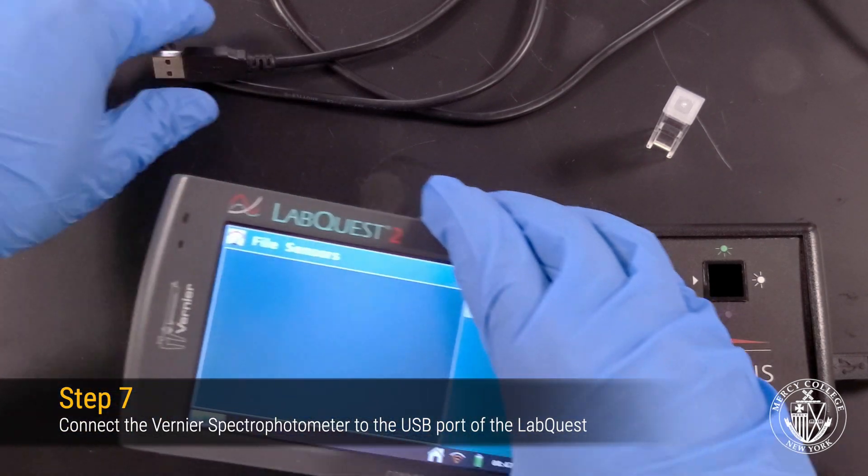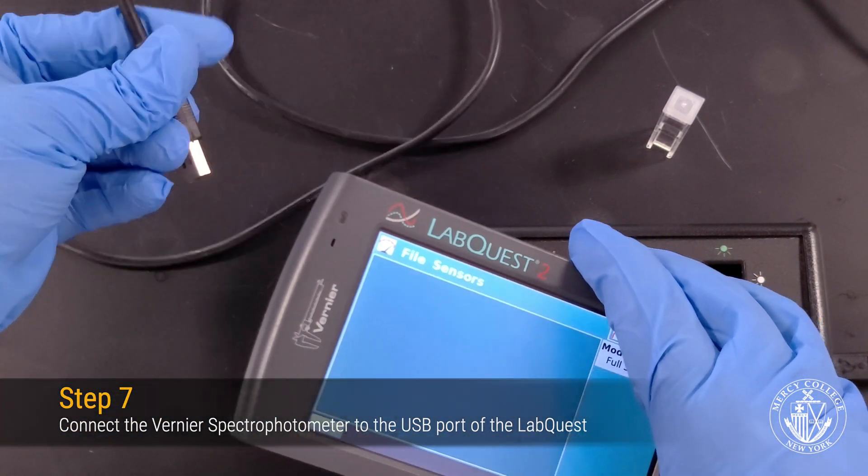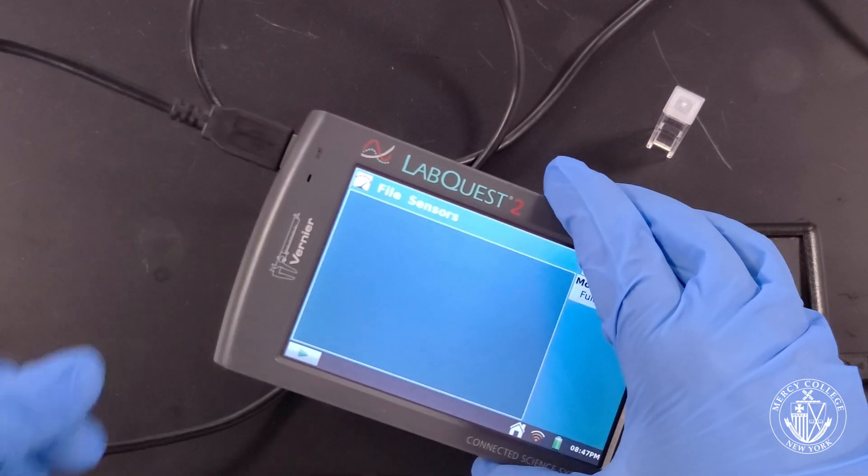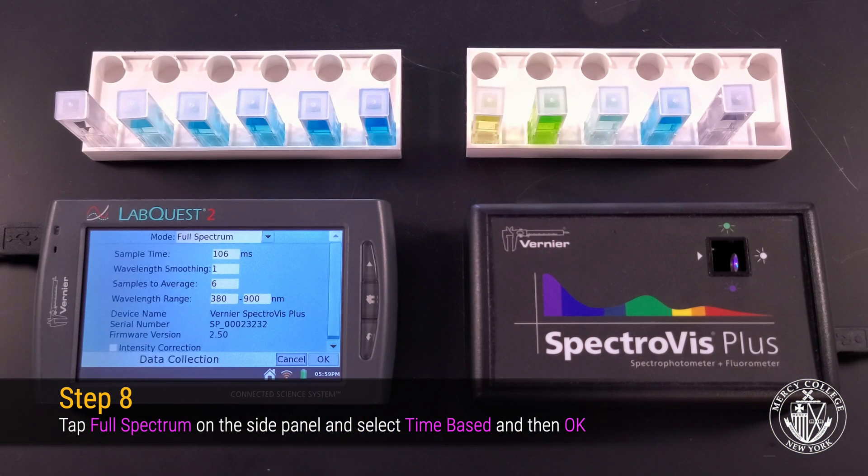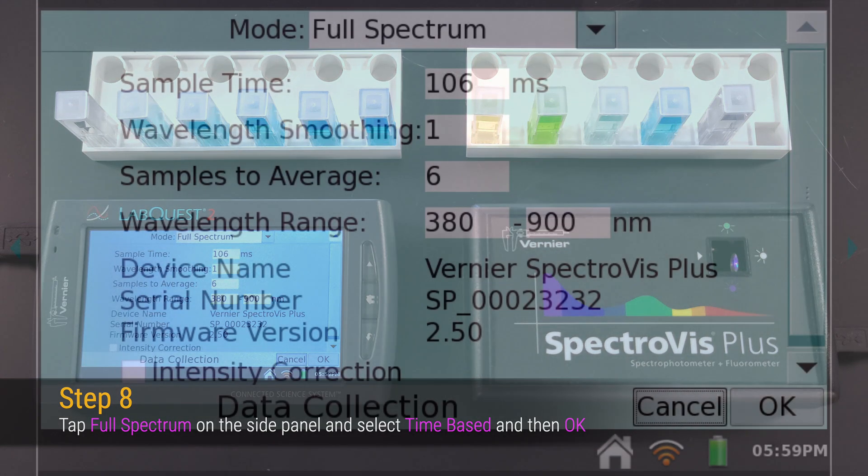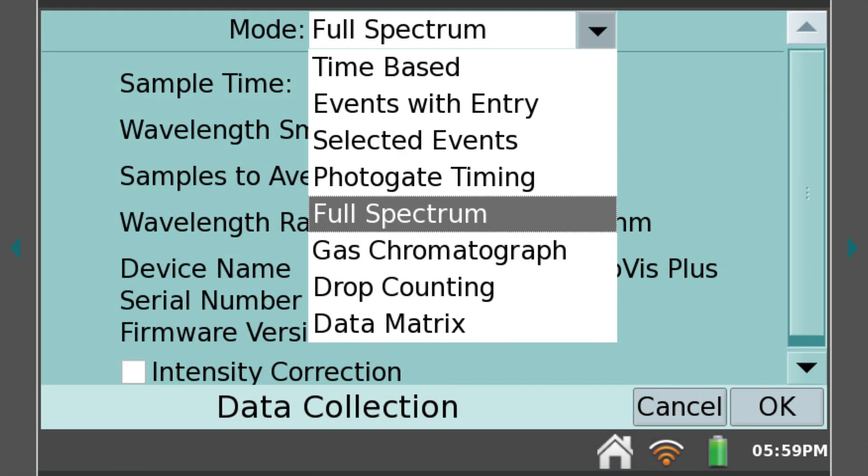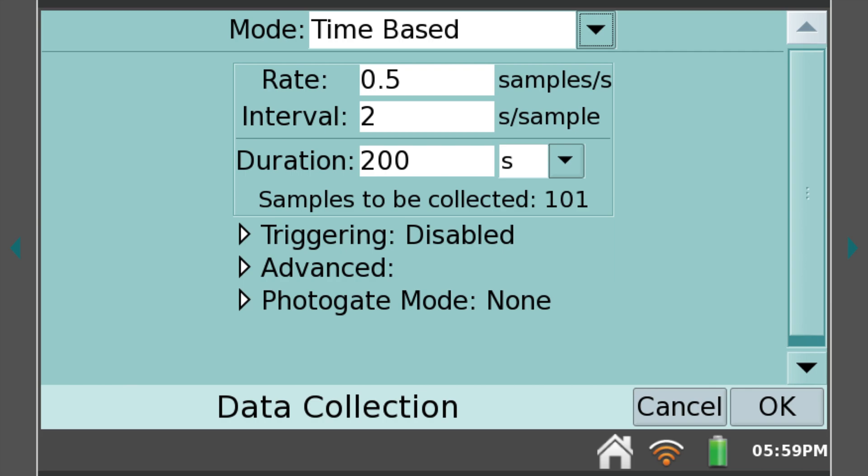To analyze your samples, you need to make sure that your spectrophotometer is connected to your LabQuest via the USB cable. On the side panel, tap Full Spectrum, and then select Time Based from the drop-down menu, and then click OK. This will give you access to the live absorbance readout.